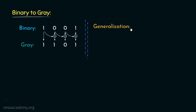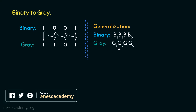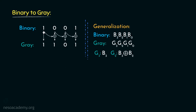From this we can state a generalization. Say we have a binary number B3, B2, B1, B0 and a gray value G3, G2, G1, G0. G3 is obtained directly from B3. G2 is obtained by XOR of B3 and B2. G1 is obtained by XOR of B2 and B1. Finally, G0 is obtained by XOR of B1 and B0.